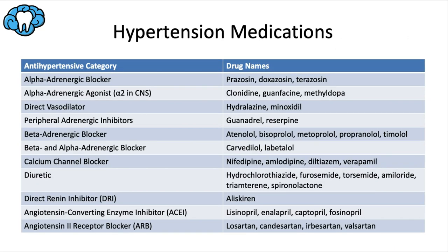Here's a list of antihypertensive medications you might see in a patient box. Alpha adrenergic blockers include the -zosins: prazosin, doxazosin, and terazosin. The alpha-1 receptor is responsible for vasoconstriction, so blocking it relaxes vessel walls and decreases blood pressure by lowering total peripheral resistance. There are also alpha adrenergic agonists — confusingly, agonizing the alpha-2 receptor in the central nervous system has a similar blood-pressure-lowering effect. Examples include clonidine, guanfacine, and methyldopa.